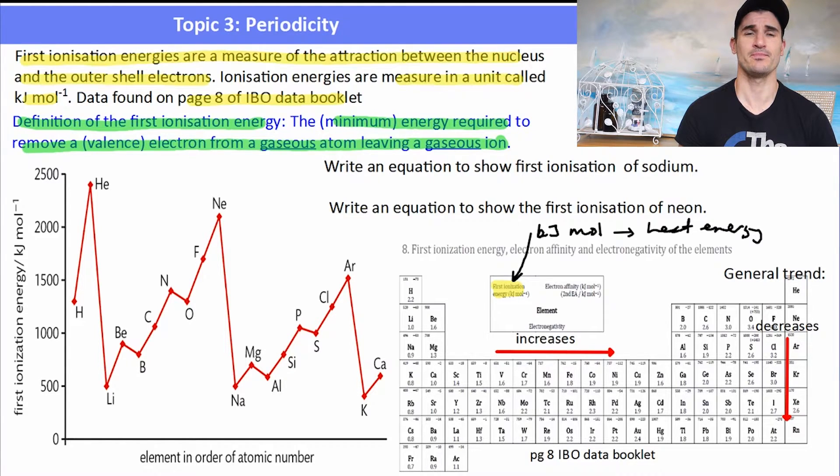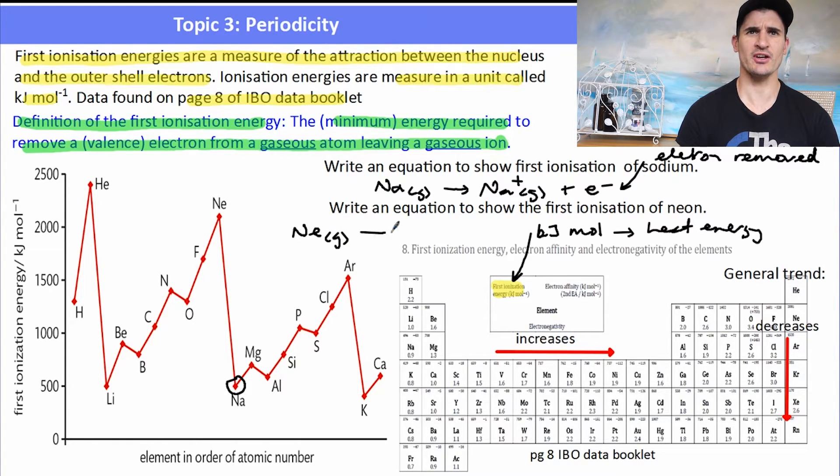So we might be asked to write an equation to show the first ionization energy of sodium. So if there is sodium, it's got a fairly low ionization energy. So to write the equation, we would have Na gas going to Na plus as a gas, a sodium ion, plus one electron. And E-minus stands for an electron, and in this reaction, we are removing an electron from a sodium atom to form a sodium ion. The first ionization energy of neon, neon as a gas, goes to neon as a positively charged ion, plus one electron. Again, it's simply just removing an electron from the outer shell of the atom.